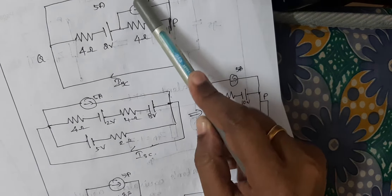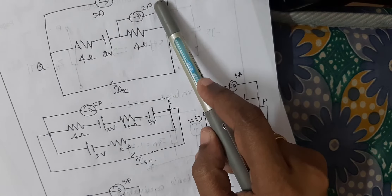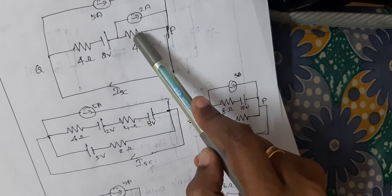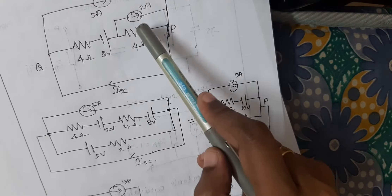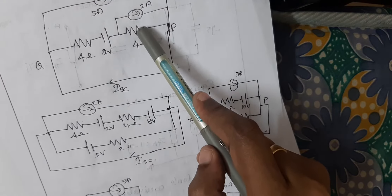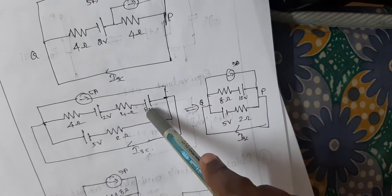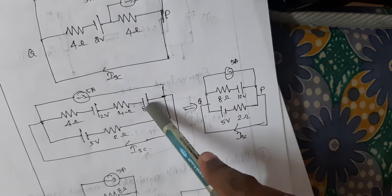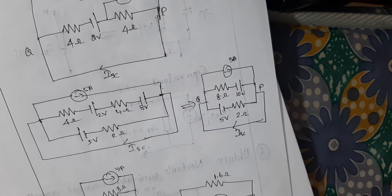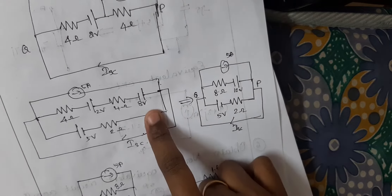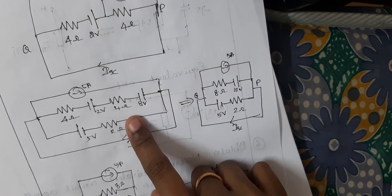See the diagram. One resistor is parallel with the current source. Using source transformation you can convert this — V is equal to I into R, that is 4 times 2, so 8V. And it is series with the resistor. Now the circuit is in the form: 8V, next 4V.